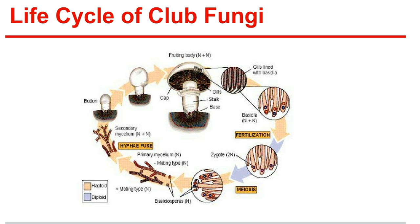Diversity of club fungi: in addition to mushrooms, basidiomycetes include shelf fungi, which grow near the surface of dead or decaying trees, as well as puffballs, earth stars, jelly fungi, and plant parasites known as rusts. Some mushrooms are edible while others are poisonous. Imperfect fungi: fungi are usually classified by the sexual phase of their life cycle. If they do not have a sexual phase, they are placed in the phylum Deuteromycota, or imperfect fungi — fungi that cannot be placed in other phyla because researchers have never observed a sexual phase in their life cycles.